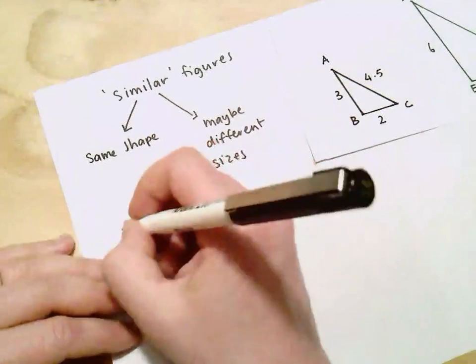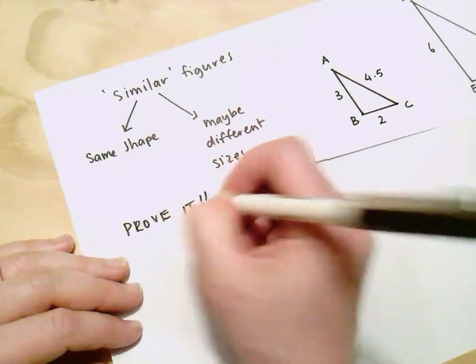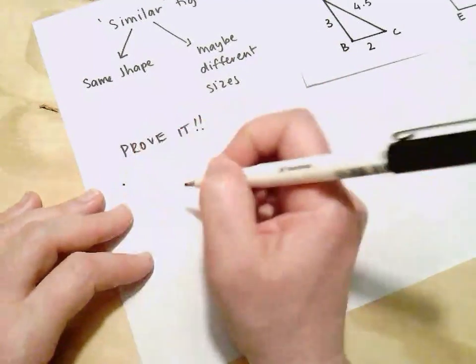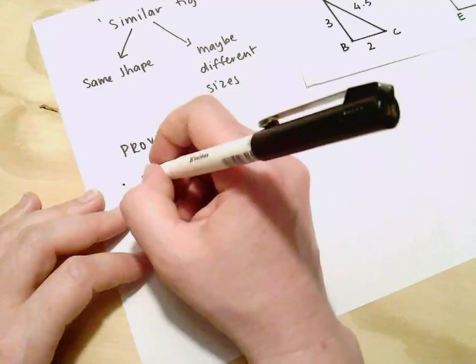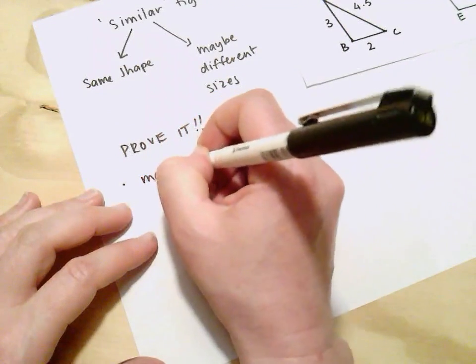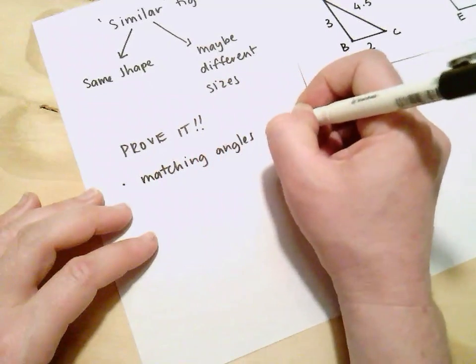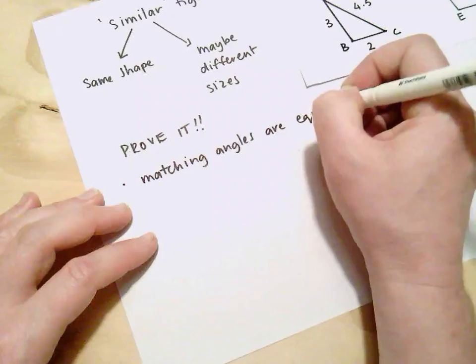And so to prove it we have two options. So the first option is that we can show that the matching angles are equal. That all the matching angles are equal.